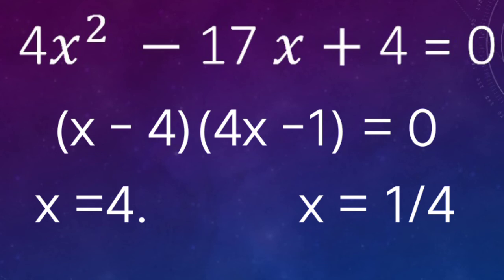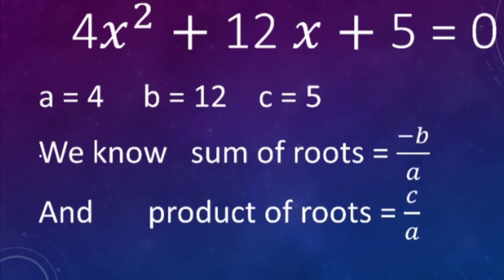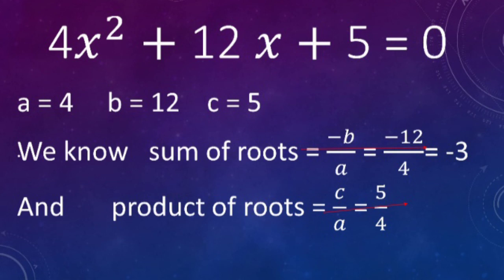Now another method for 4x² + 12x + 5 = 0. Comparing with the standard form ax² + bx + c = 0, we get a=4, b=12, c=5. The sum of roots formula is −b/a = −12/4 = −3. The product of roots formula is c/a = 5/4.